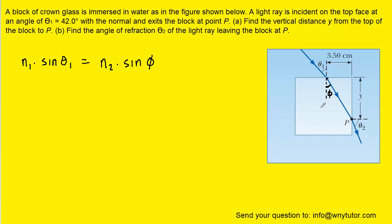And then our unknown angle is phi. And that's what we're going to try to find. So why don't we actually divide both sides of the equation by n2. And then to isolate the angle phi, we'll have to take the inverse sine of both sides.